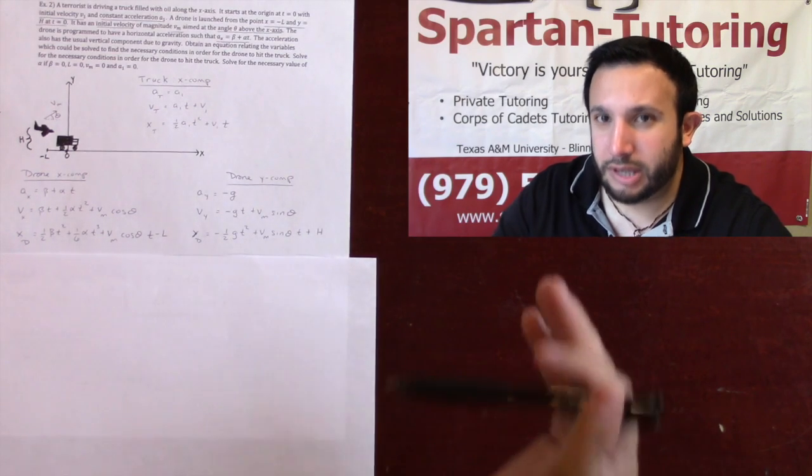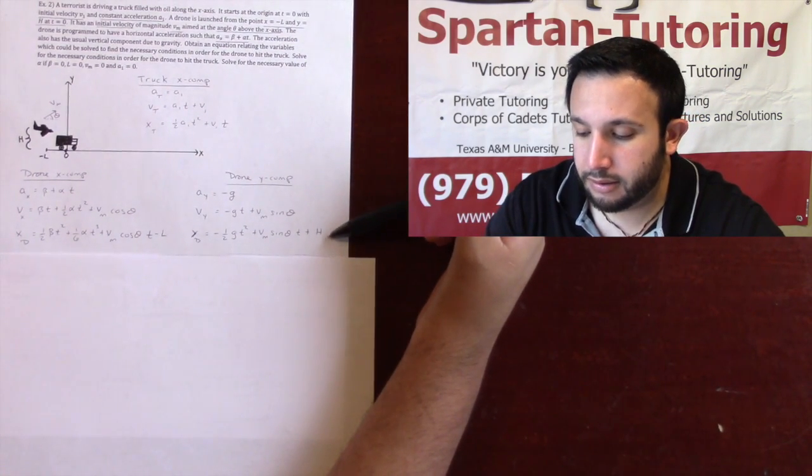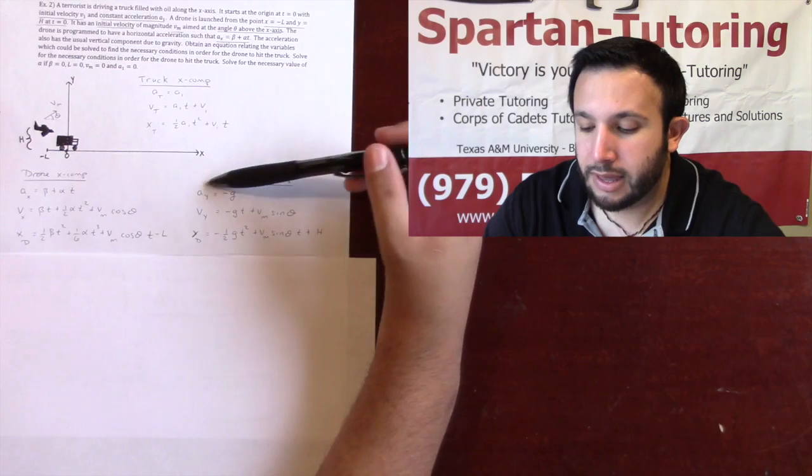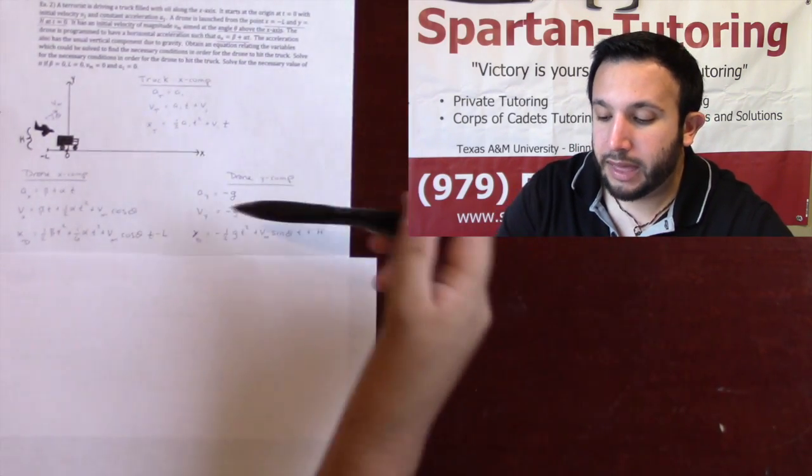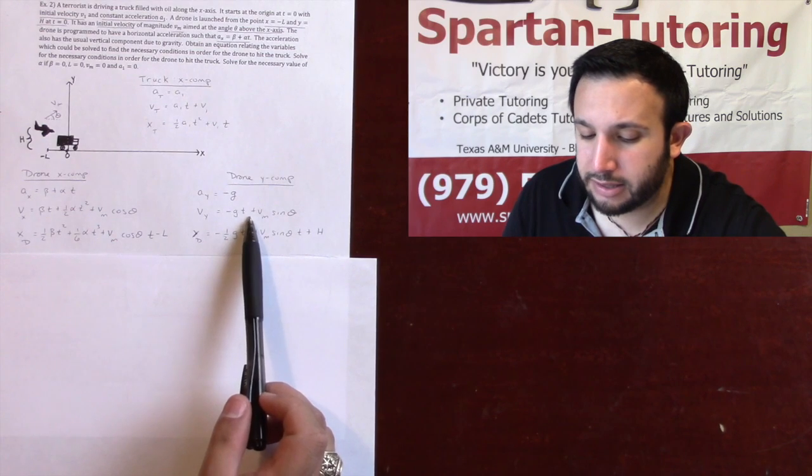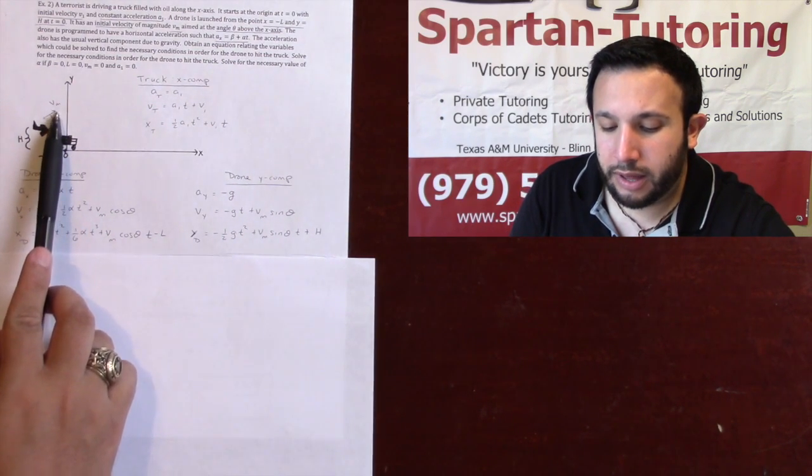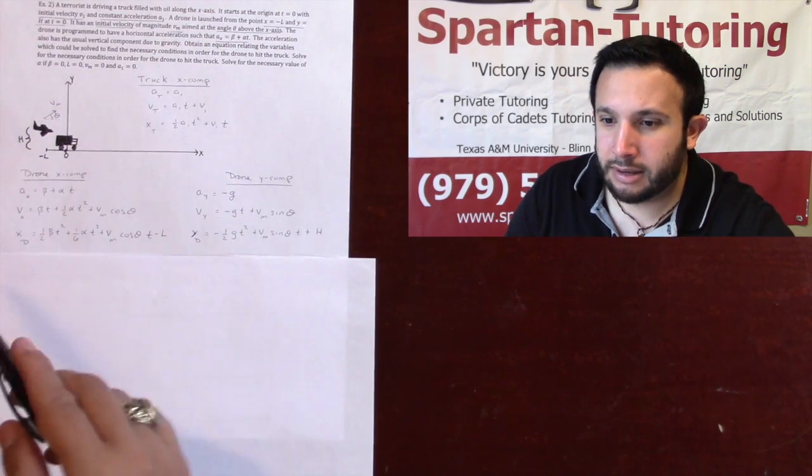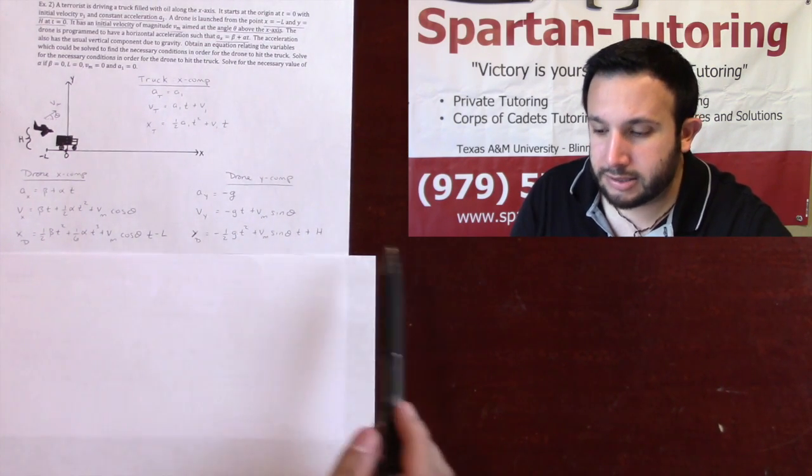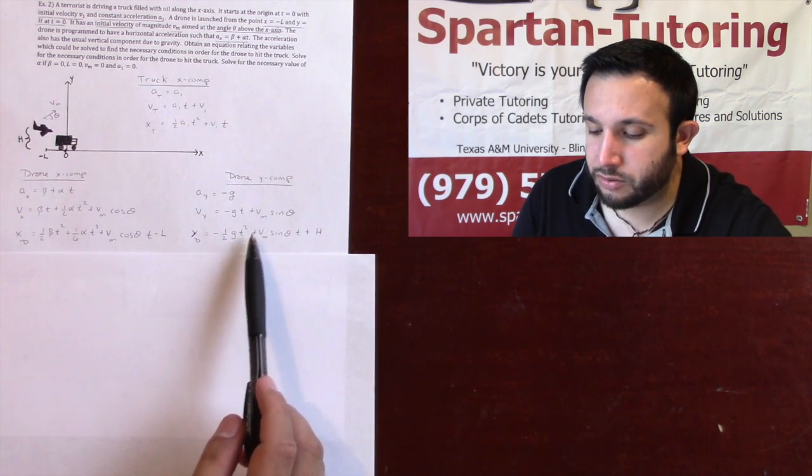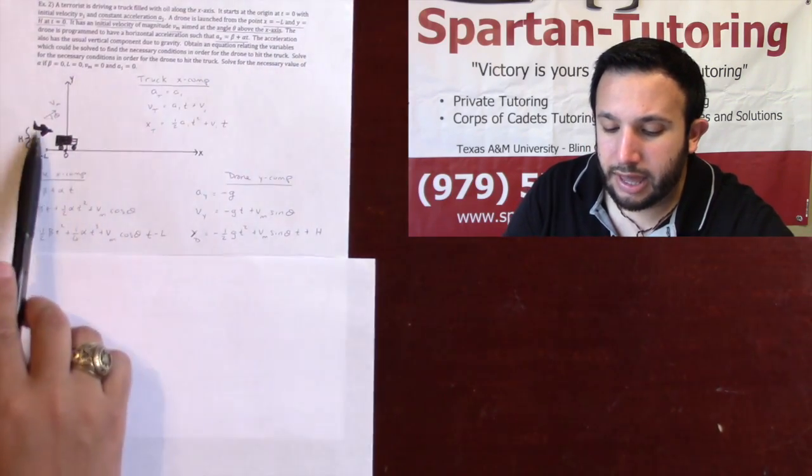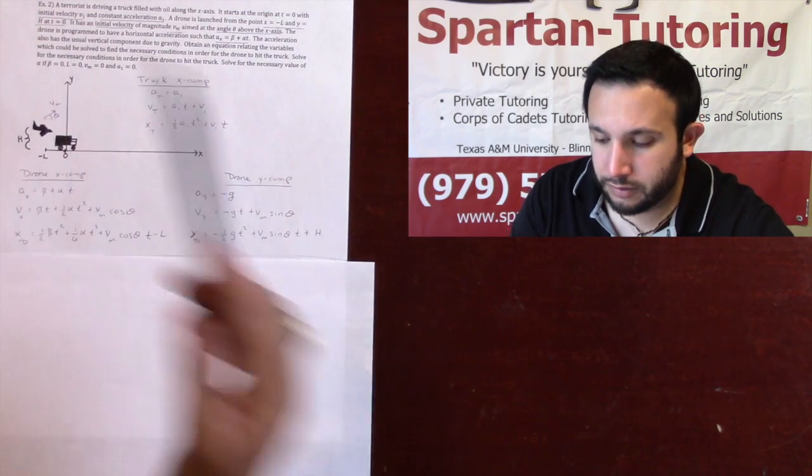Finally, before we can even begin to hope to answer the question, we've got to set up the y component for the drone. And so I told you earlier that it said the usual vertical component due to gravity. Acceleration in the y direction, negative g. Okay? Now the velocity, velocity is the integral of acceleration. So it's going to be negative g times t plus, and then the initial velocity in the y. I want the y component of my velocity. That's vm sine theta. It's opposite the angle. And then finally, if you want the position in the y direction of the drone, that's the integral of your velocity. So that's where I get the negative one-half gt squared plus this vm sine theta t. And then plus the initial position in the y. And it said initially, it started at y equals h whenever t is zero. So plus h.